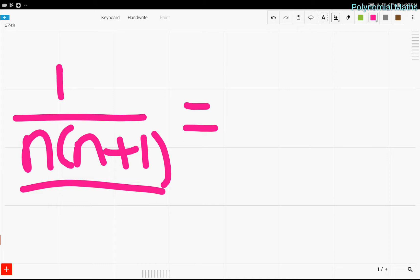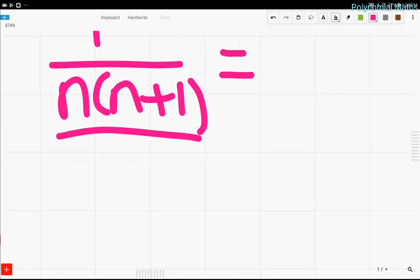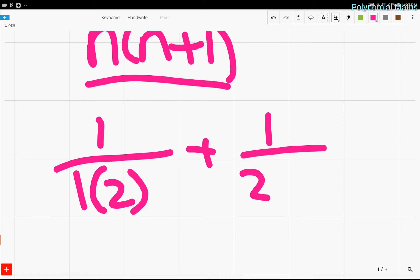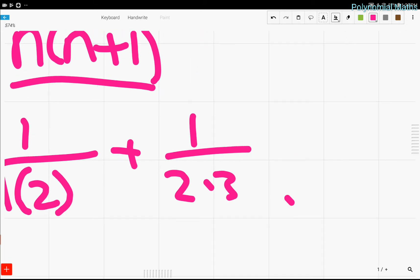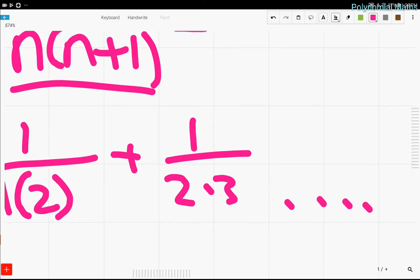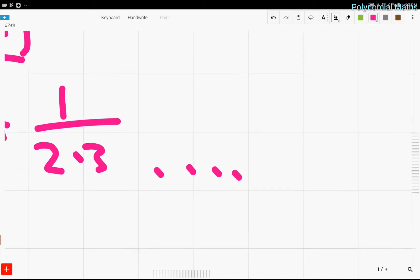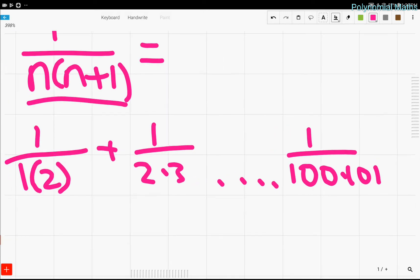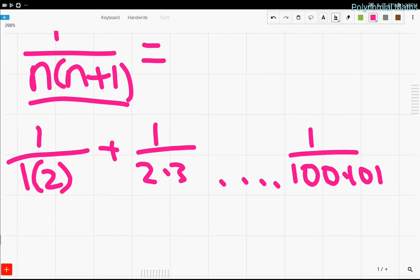Now, partial fraction decomposition is especially useful when you're looking at a sum of numbers. For example, 1 over 1 times 2, plus 1 over 2 times 3, and then so on. And you want to find the sum of that, all of those, all the way up to, let's say, 1 over 100 times 101. And that might be pretty hard, until you realize that there's another way to do it, which we'll see later in this video.